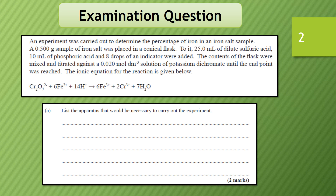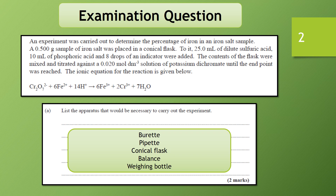We're asked first of all to list apparatus necessary to carry out the experiment. This is a titration reaction, so what do we normally use? Certainly we need a burette, a pipette, a conical flask as mentioned in the question. We also need to weigh out the iron salt, so we need a balance and possibly a weighing bottle. If you can think of any other apparatus necessary, you can add that.